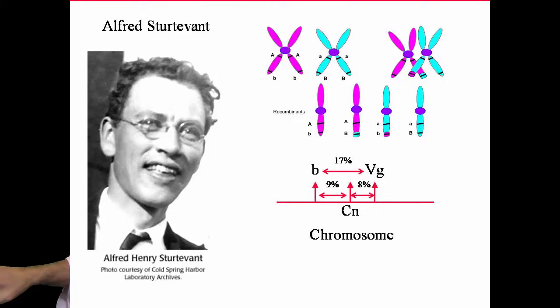And so what he thinks is that cinnabar is either to the right of the vestigial by 8% or to the left of the vestigial by 8%. If it's to the right, then the black body should be 25% away. If it's to the left, then the black body should be 8% minus 17% or 9% cinnabar. That is, should be 9% to the right of the black body or 8% to the left of the vestigial. I'll show you the diagram in just a minute.